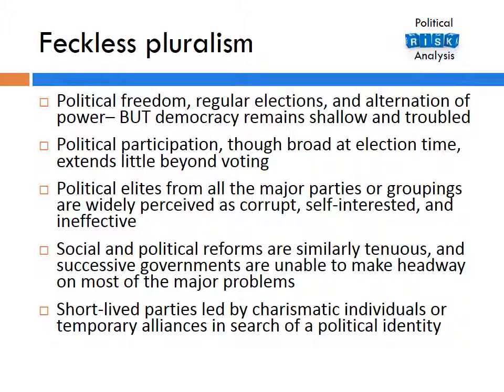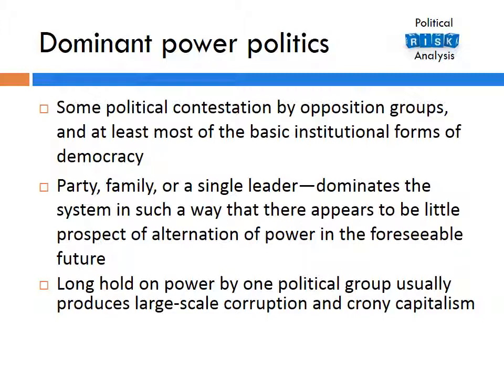Dominant power politics has some political contestation by opposition groups and at least most of the basic institutional forms of democracy. However, a political party, family, or single leader dominates the system in such a way that there appears to be little prospect of alternation of power in the foreseeable future. Long hold on power by one political group usually produces large-scale corruption and chronic cronyism. Dominant power systems tend to be found in Russia, Armenia, Azerbaijan, Georgia, Kyrgyzstan, and Kazakhstan.